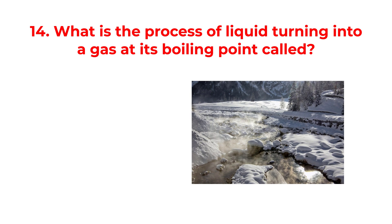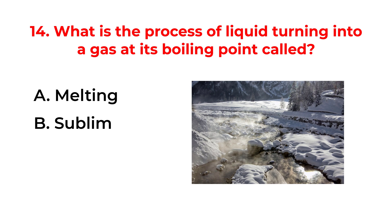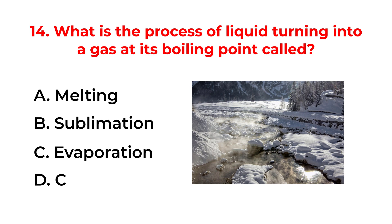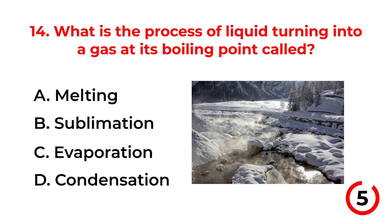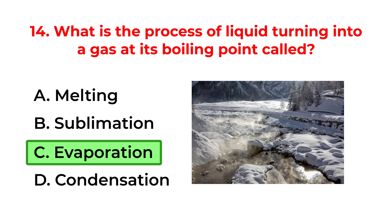What is the process of a liquid turning into a gas at its boiling point called? A. Melting. B. Sublimation. C. Evaporation. D. Condensation. The correct answer is option C: Evaporation.